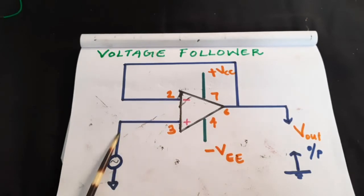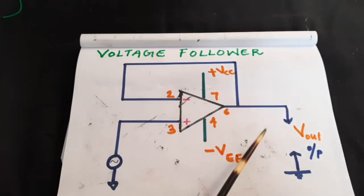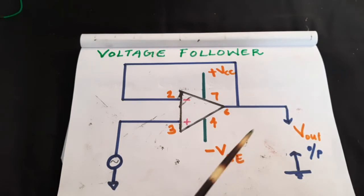In other words, whatever is the phase and magnitude of your input, it will be the same for the output also. Output will also have the same voltage and same phase. That is why you call the circuit as voltage follower.